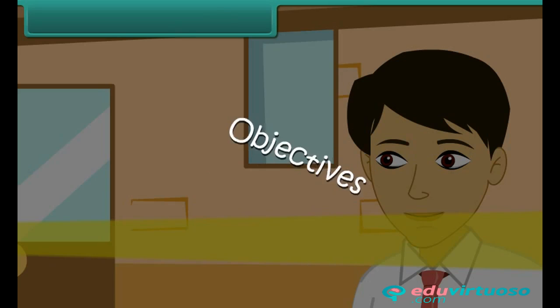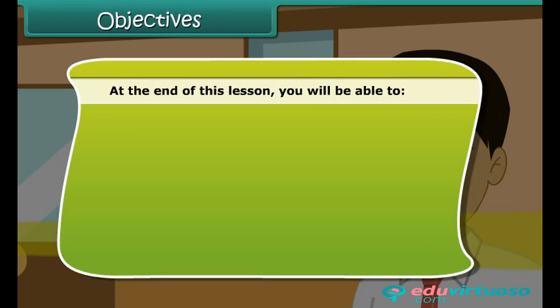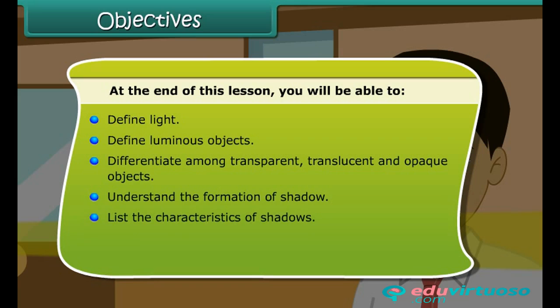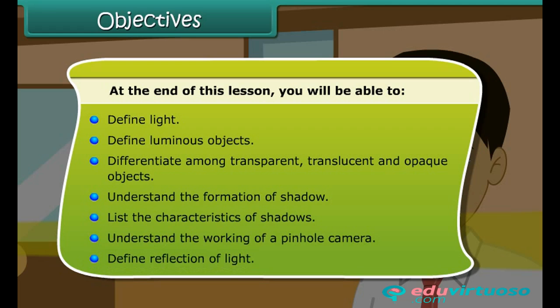At the end of this lesson you'll be able to: define light; define luminous objects; differentiate among transparent, translucent, and opaque objects; understand the formation of shadows; list the characteristics of shadows; understand the working of a pinhole camera; and define reflection of light.